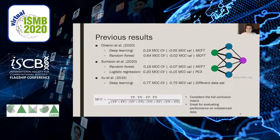Let's look at some previous attempts at predicting DILI. The first two that we have here are from the previous iteration of this CAMDA challenge. This last one by Zhu et al. is not from a CAMDA challenge, but a separate attempt at predicting DILI primarily from chemical descriptors. The first thing that's important to know is that we're using MCC as the metric here — Matthews Correlation Coefficient. It uses the full confusion matrix and is great for evaluating performance on imbalanced data, which is the case here.